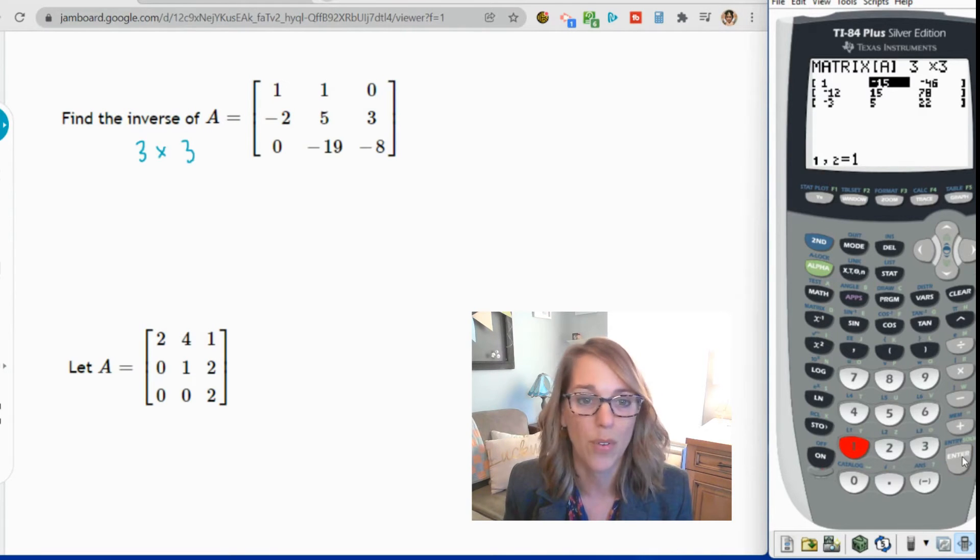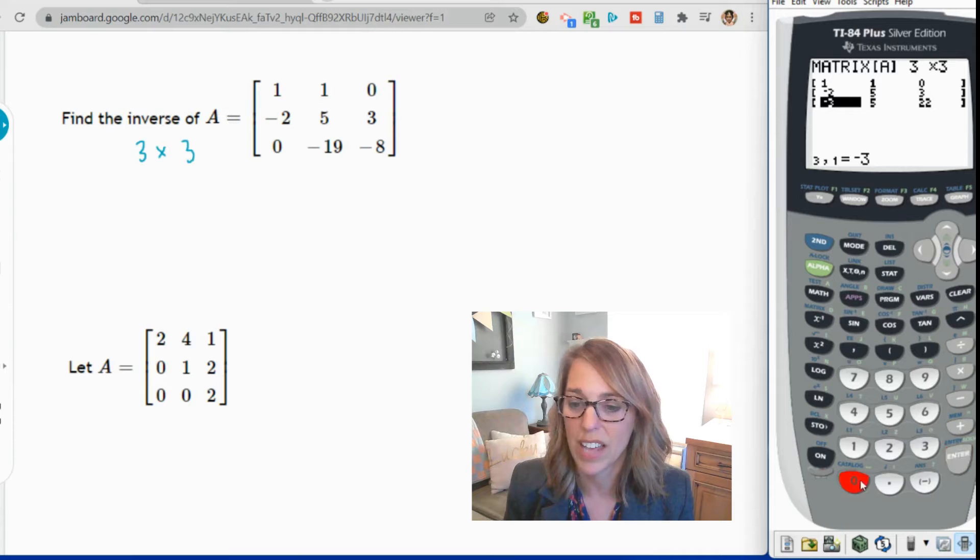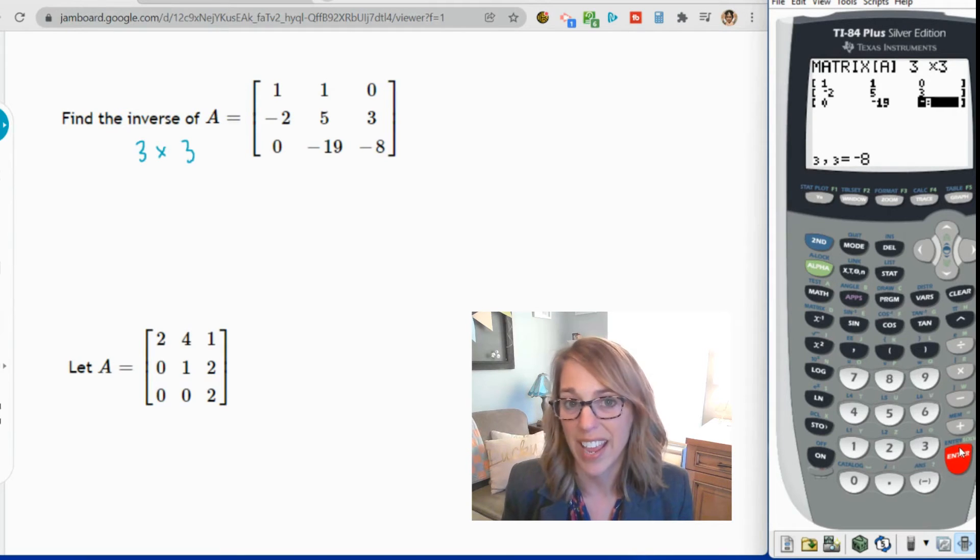I'm going across the row, hitting each number and then the enter key. To get a negative in, I use the little negative down by the enter. So negative two starts the second row, five, enter, and then three, enter. And then finally the last row, zero, enter. Again, negative down by the enter sign. Oh, and I want negative 19, not negative 18, enter, and then negative eight. So I've got this in here as matrix A.